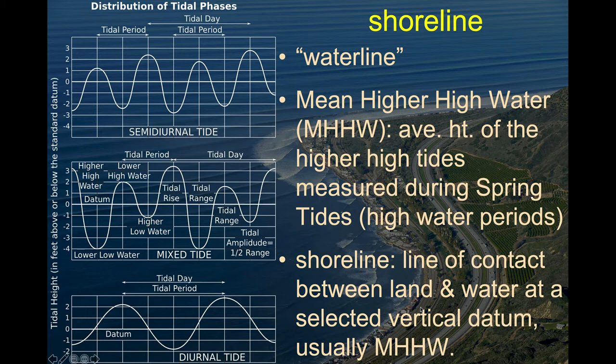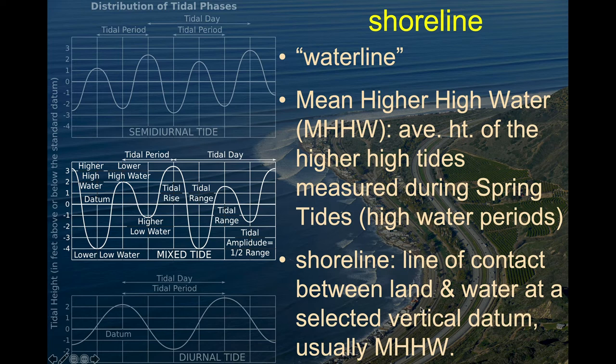The shoreline — sometimes called the waterline — is the exact area where oceanic water touches dry terrestrial land. Obviously we have tides, so the ocean goes up and down. In our part of the world, we have what's known as mixed semi-diurnal tides, which is the majority of the world. That means we have two high tides and two low tides on most days, with one of those highs being higher than the other and one of those lows each day being lower than the other.